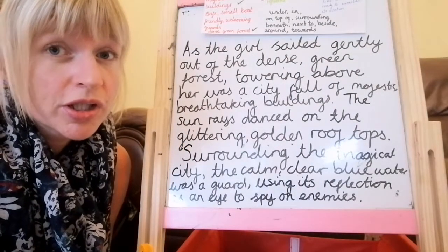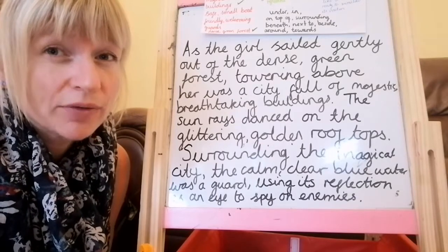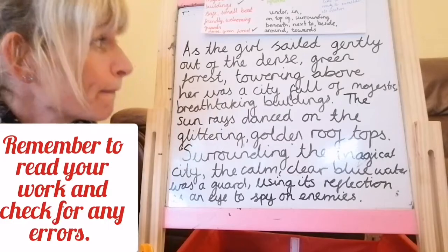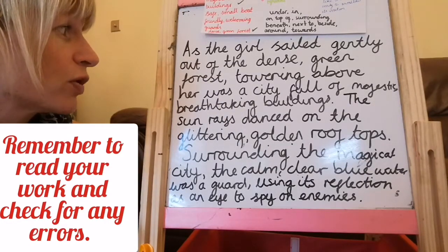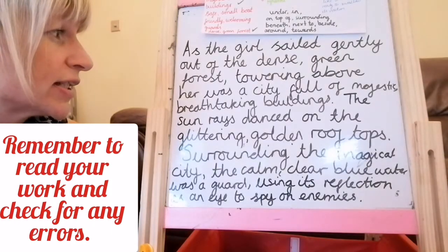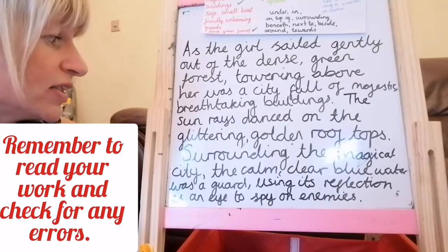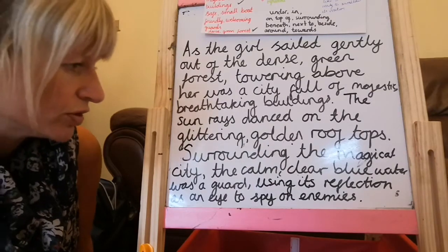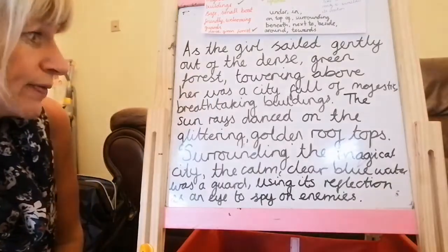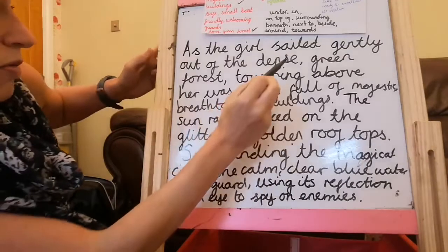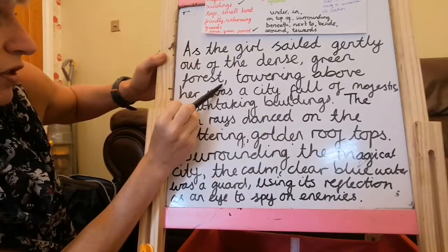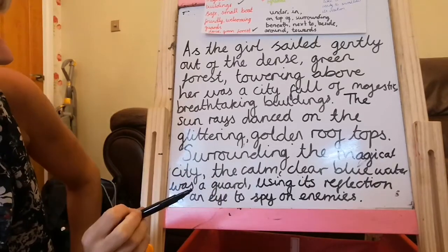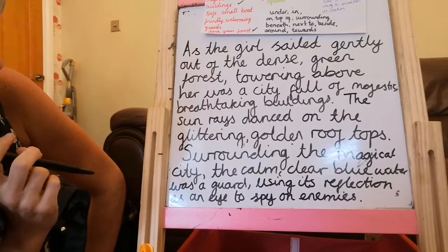Remember, like we would do in class, it's always good after a few sentences to read your work out loud to check it makes sense, see if you need to add any more words, or if you've missed any punctuation. So I'm going to read through mine: As the girl sailed gently out of the dense green forest, towering above her was a city full of majestic, breathtaking buildings. The sun rays danced on the glittering golden rooftops. Surrounding the magical city, the calm, clear blue water was a guard using its reflection as an eye to spy on enemies. Just double-check commas for a list and commas after any subordinate clauses.